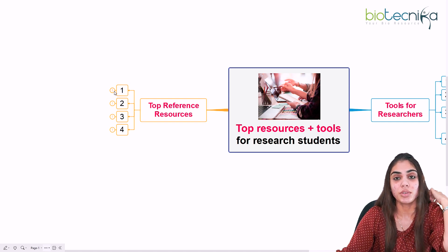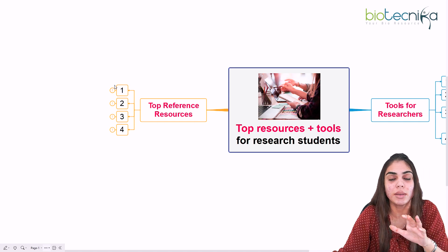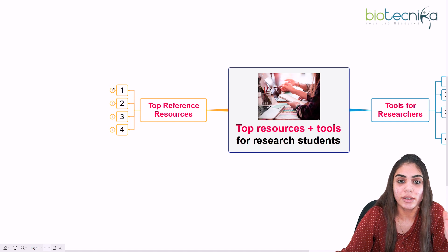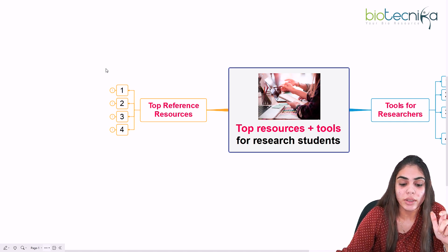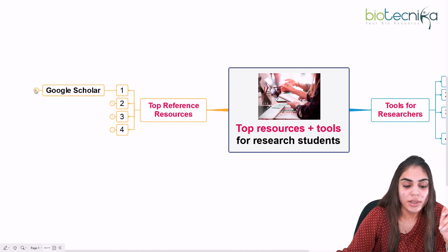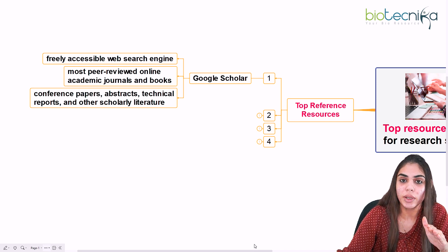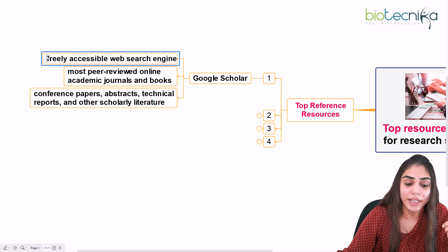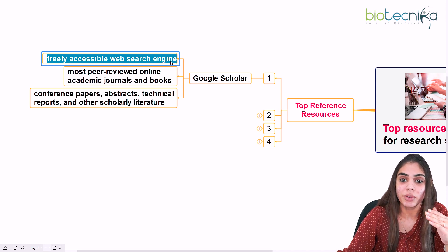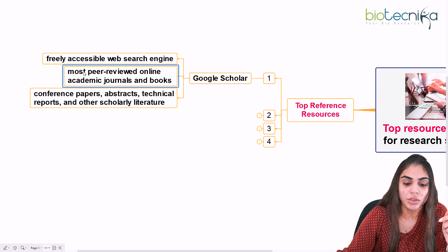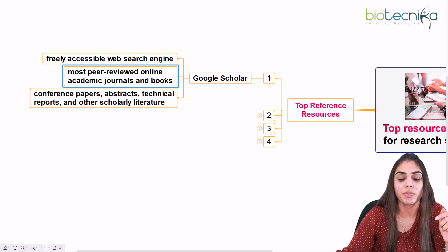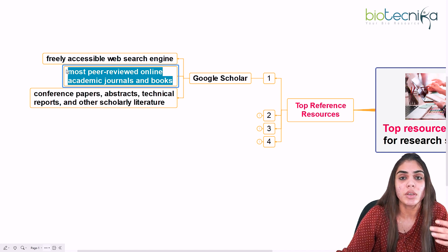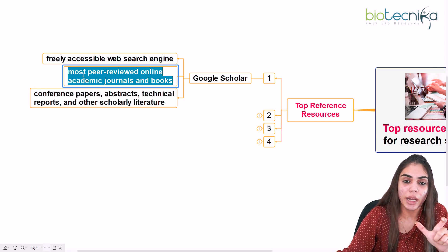Now, what are the top reference resources you can use? For example, if you are working on immunology and B-cells and want to search related literature, you can use these reference resources. The first is Google Scholar — everyone knows it. Once you type 'Google Scholar' into Google, you get that page. It is a freely available web search engine for peer-reviewed academic journals, books, research papers, and review papers in different fields of science.